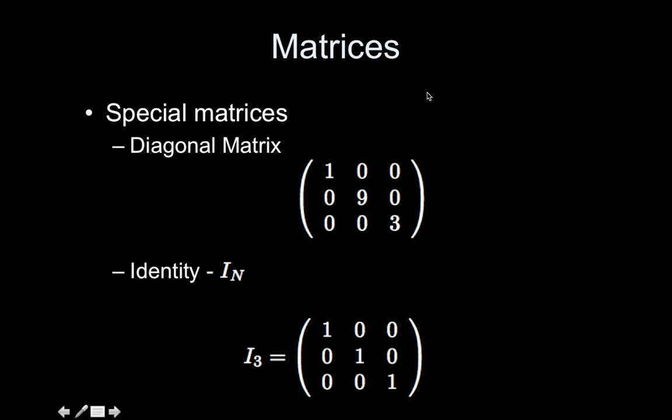The diagonal matrix is a special square matrix where you only have non-zero entries on the diagonal. And the identity matrix is a special type of diagonal matrix where you only have ones on the diagonal. So it's the matrix equivalent of the number one.